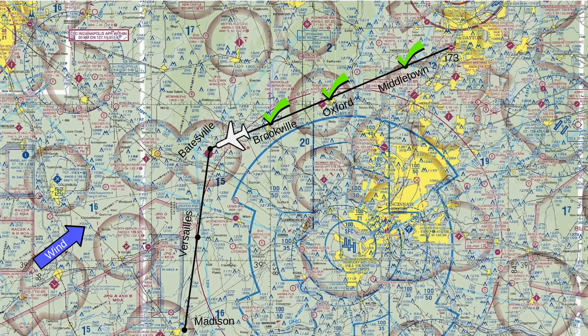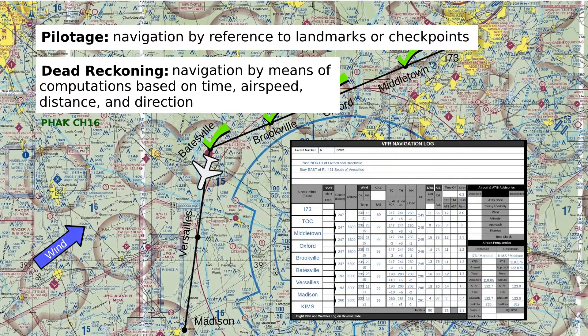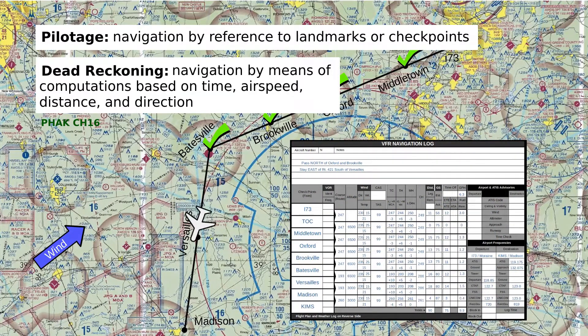The key objective of VFR flight planning is to produce a marked sectional and navigation log. With these documents, it's possible to navigate extended cross-country flights using only pilotage and dead reckoning.